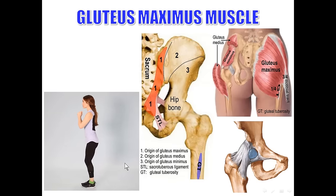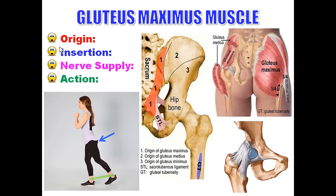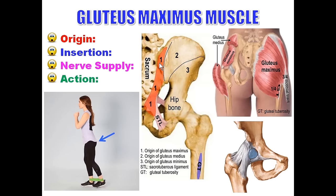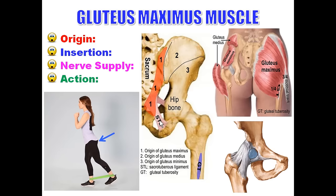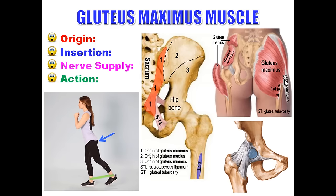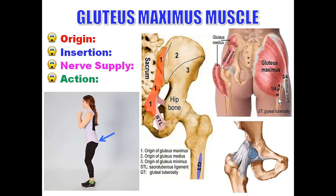Starting with the gluteus maximus muscle: its origin is from three parts — from the gluteal surface of the hip bone behind the posterior gluteal line, from the back of the sacrum, and from the back of the sacrotuberous ligament. For insertion, the superficial three-quarters are inserted into the iliotibial tract, and the deep quarter is inserted into the gluteal tuberosity of the femur.